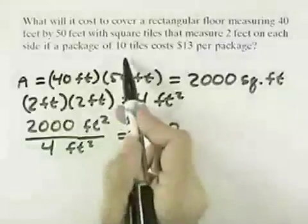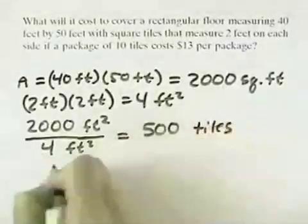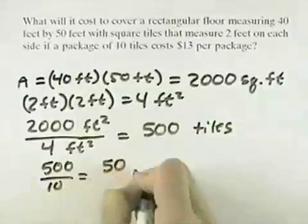Now the tiles come 10 per package, so this means 500 tiles. If we take the 500 and divide it by 10, that means 50 packages.